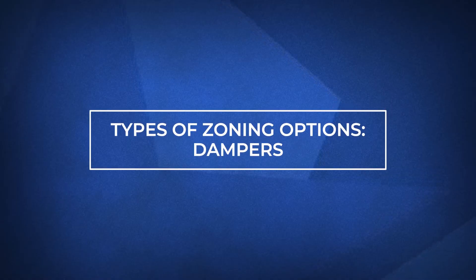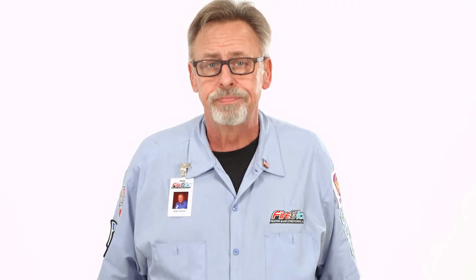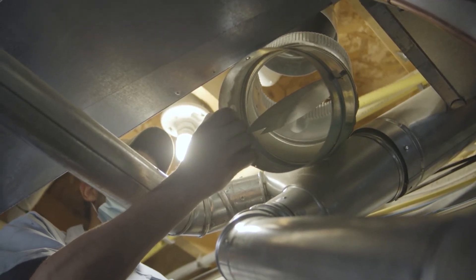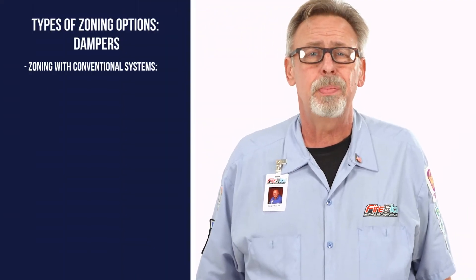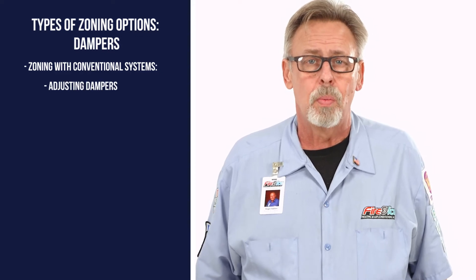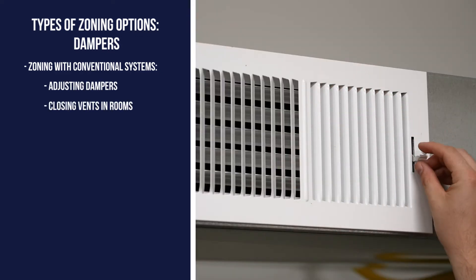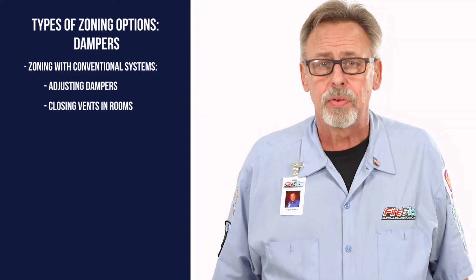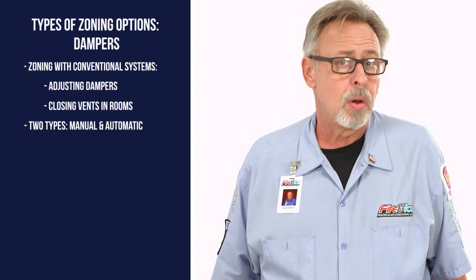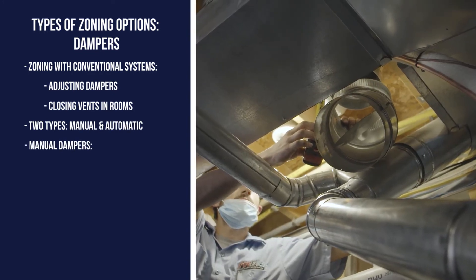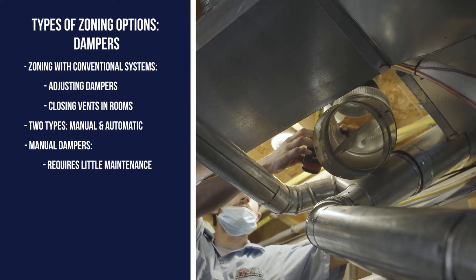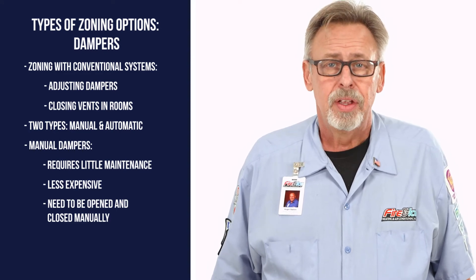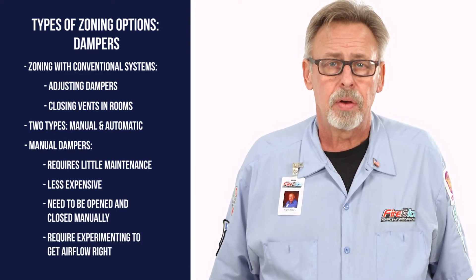Remember the conventional heating and cooling system described earlier? If dampers were included on that system, we could eliminate the uneven temperatures. Adjusting dampers in the ductwork is one of the cheapest ways to create zones in a home. Additionally, closing off vents in rooms that aren't used is another way to zone. If your home's ductwork lacks dampers, they can be added. There are two types: manual and automatic. The benefits of manual dampers are that they need very little maintenance and are less expensive. The downside is they have to be opened and closed manually, and you'll likely need to experiment to get airflow where you want it.